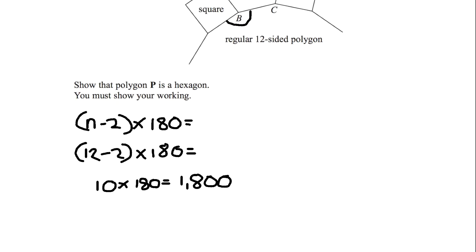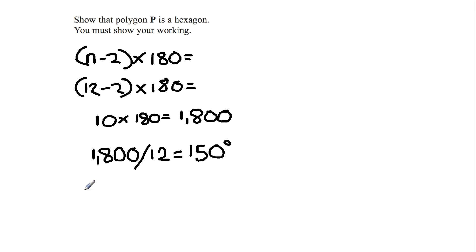Now we need to find the angle B. So what we're going to be doing next is dividing 1,800 by 12, which is 150 degrees. So we now know that the angle B is 150 degrees.